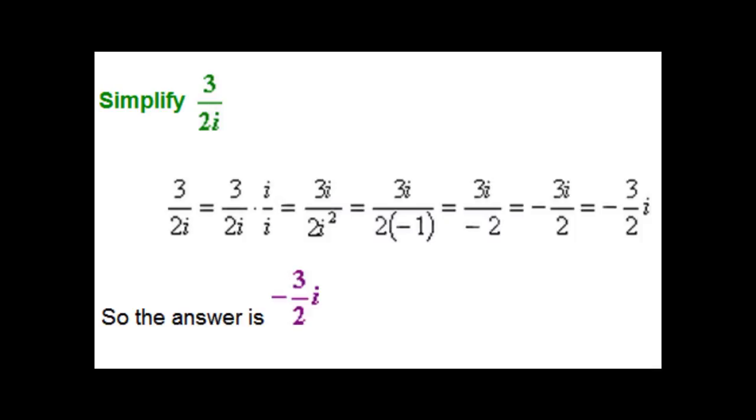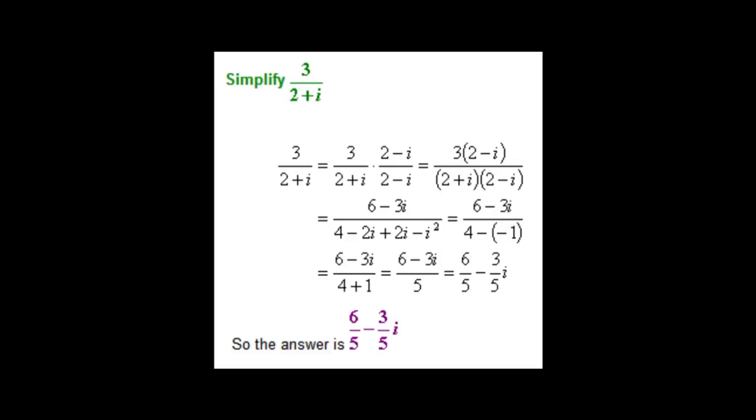However, problems can get more complicated, and instead of having just one imaginary term, you might have a complex number with two terms on the bottom of your fraction. In the example of 3 over 2 plus i shown here, the denominator contains two terms, 2 plus i. Multiplying by just i will not work because one of the terms will still have the imaginary number in it. To deal with this issue, you must instead multiply by the conjugate of the complex number in the denominator. The conjugate of a complex number is the same number but with the opposite sign, so the conjugate of 2 plus i in the denominator is 2 minus i.